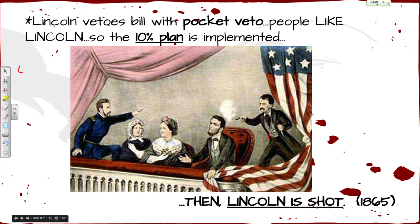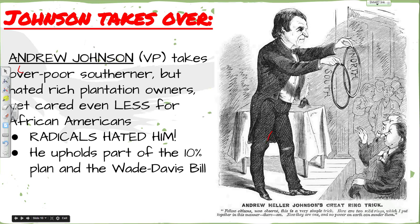Then Lincoln was shot in 1865 — five days after the surrender at Appomattox — and Andrew Johnson took over. Johnson was a poor southerner who hated rich plantation owners, but cared even less for African Americans because he felt they were taking jobs from poor Southern whites. The radicals hated him because he was a southerner. He ended up upholding parts of both the 10% plan and the Wade-Davis bill, essentially trying to merge the two together.